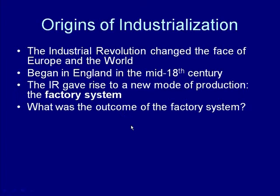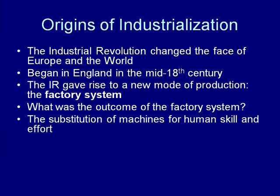What was the outcome of the factory system? Number one, the substitution of machines for human skill and effort. What made the factory so productive was the fact that machines don't take vacations, don't take sick time, and work at a pace far more effective than human labor. On the farm, people get sick and hurt and are much less productive than machines. So the factory system really led the way towards mechanizing labor.